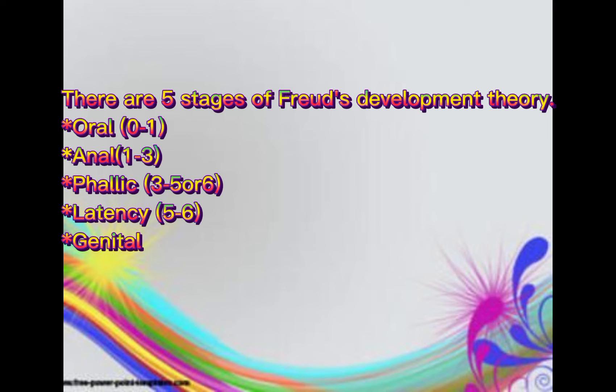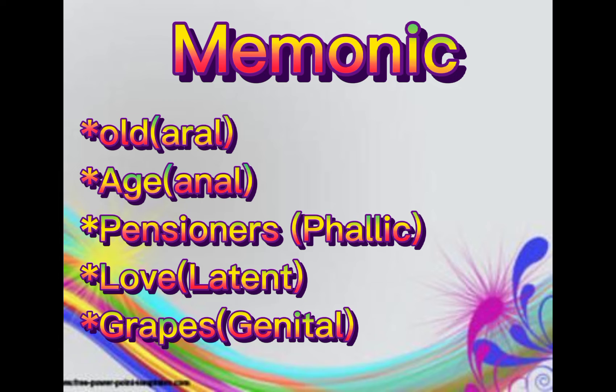There are five stages of Freud's development theory: oral stage, anal stage, phallic stage, latency stage, and genital stage. You can remember the order of these stages using the mnemonic: Old (oral), Age (anal), Pensioners (phallic), Love (latent), Grapes (genital).